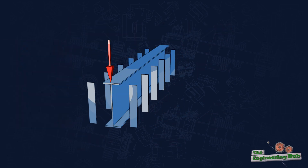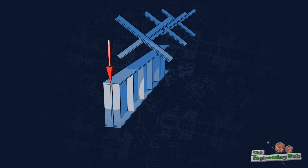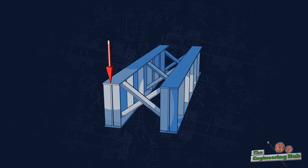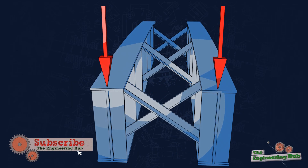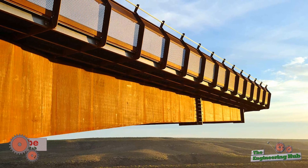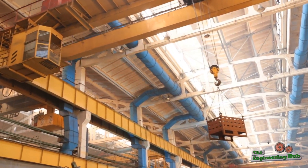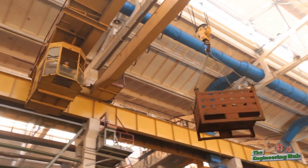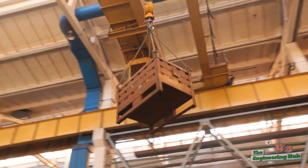The good thing about lateral torsional buckling is that it is relatively easy to deal with. The most common solution is to laterally brace the compression flange of the beam, so the beam is held in place and can reach its full bending capacity without stability issues. In some situations, such as single beams or warehouse cranes, lateral bracing is not easily achievable. In that case, engineers must carefully select the type of section used and ensure the beam will not become unstable before reaching its capacity.